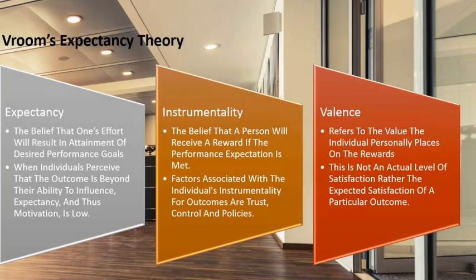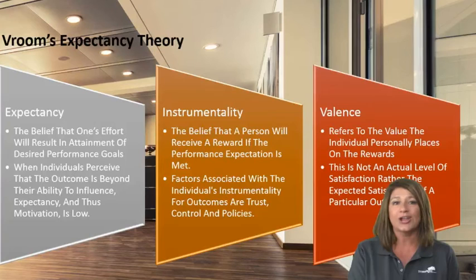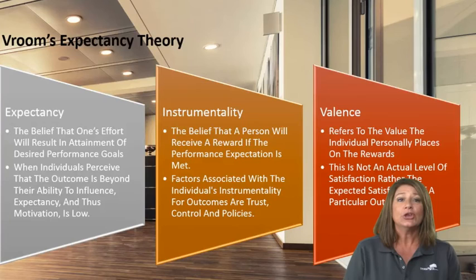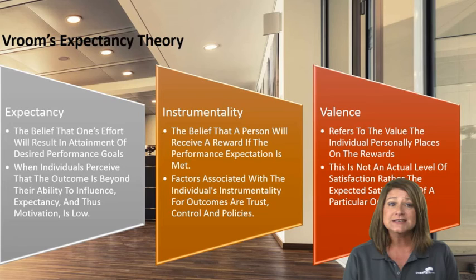The last theory is Vroom's expectancy theory. At its most basic, everybody walks around with the expectancy that their efforts will result in attaining their desired performance goals. When they perceive that goal is far out of reach, their motivation becomes low. At the same time, that person believes they will receive a reward if that performance expectation is met, and the valence — or value — they place on that reward has to be met as well. What Vroom was saying for managers is: set good expectations, help your folks be successful, provide reward and recognition they find valuable, and spell it out so they know — if you do this, you will get that.